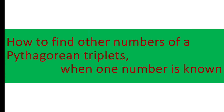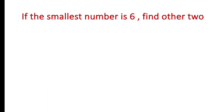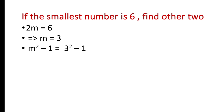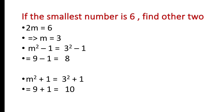Now, how to find the other numbers of a Pythagorean triplet when one number is known. Example: if the smallest number is 6, find the other two numbers. Since 2m is the smallest, we set 2m = 6, giving m = 3. Then m²−1 = 9−1 = 8, and m²+1 = 9+1 = 10. So 6, 8, and 10 are the Pythagorean triplets.